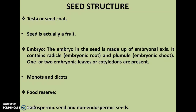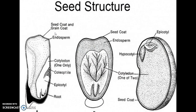Next is the food reserve. In some plants, cotyledons contain high quantities of starch and provide a source of food for the developing embryo prior to germination. In other plants, this role is performed by an endosperm. Based on the presence or absence of endosperm, seeds are classified into endospermic seeds and non-endospermic seeds.